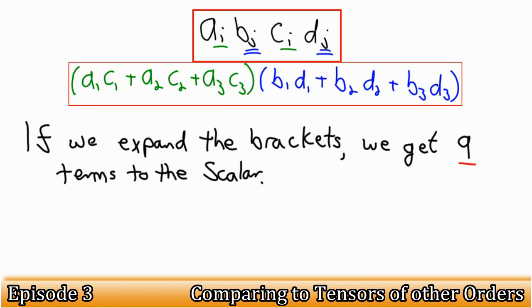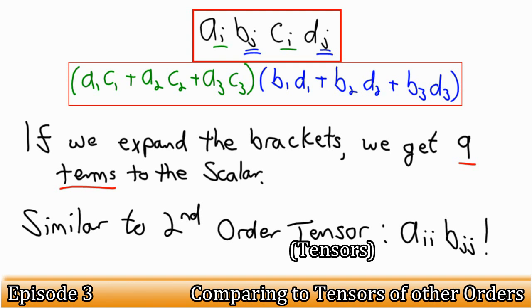So, Ai Bj Ci Dj hold very similar properties to the product of two second order tensors, such as Aij Bij.